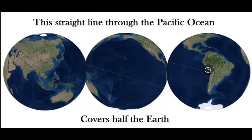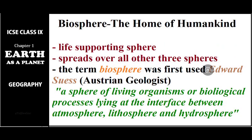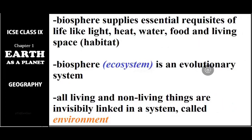The biosphere is the life-supporting sphere. It spreads over all three spheres — the atmosphere, hydrosphere, and lithosphere. This term was first used by an Austrian geologist named Edward Suess. According to him, the biosphere is a sphere of living organisms and biological processes lying at the interface between the atmosphere, lithosphere, and hydrosphere. The biosphere supplies essential requisites for life, like light, heat, water, food, and habitat. The biosphere is sometimes also called an ecosystem, and it is an evolutionary system that develops slowly.